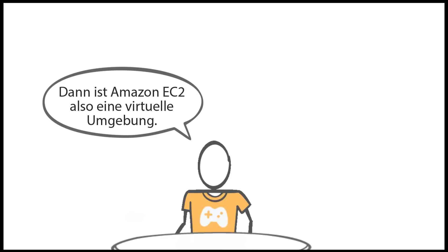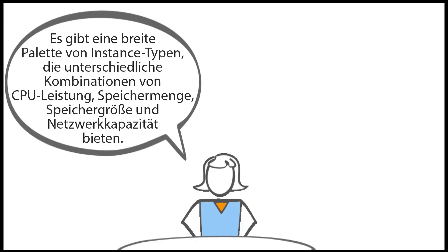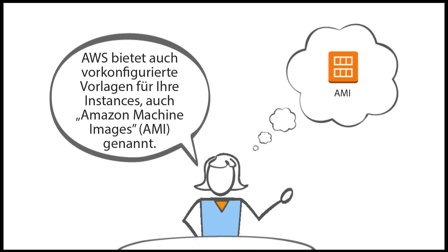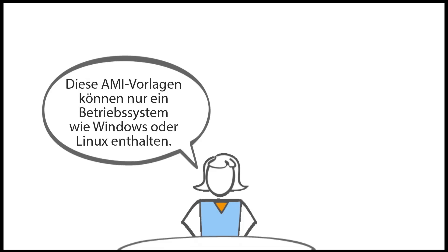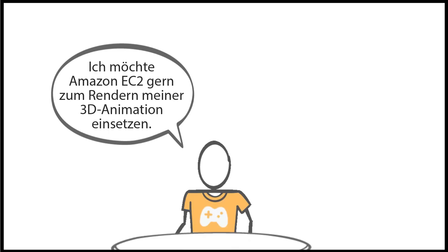Amazon EC2 environments are called instances. There are a wide range of instance types with varying combinations of CPU power, amount of memory, storage size, and networking capacity. AWS also provides pre-configured templates for your instances known as Amazon Machine Images, or AMIs. These AMI templates can include just an operating system like Windows or Linux, or a wide range of components such as the operating system and pre-installed software packages.